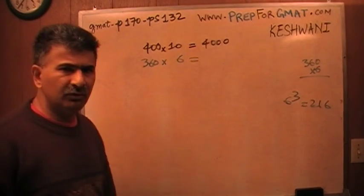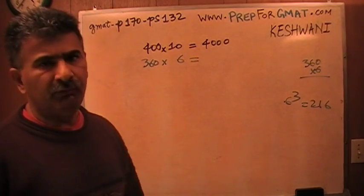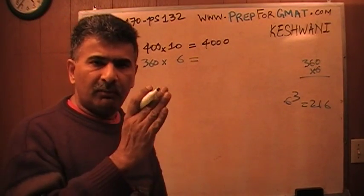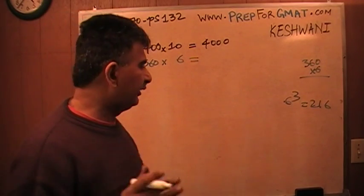You should know some of these basic things. You should know the cube of 2, 3, 4, 5, and 6. You should know all the squares from 1 through 20, with the exception of maybe 17, 18, and 19.